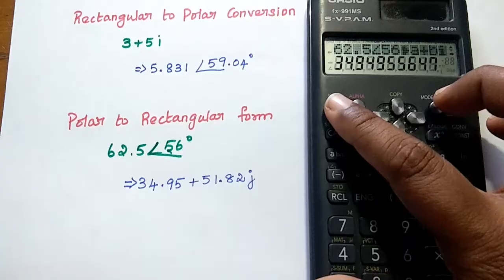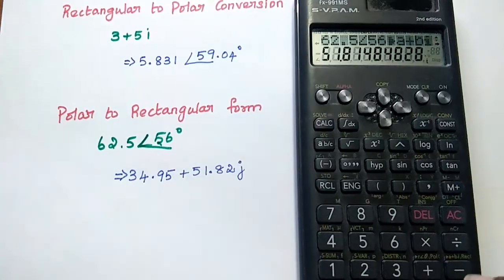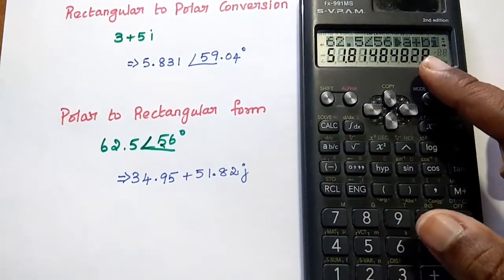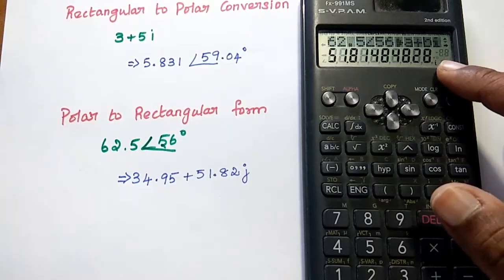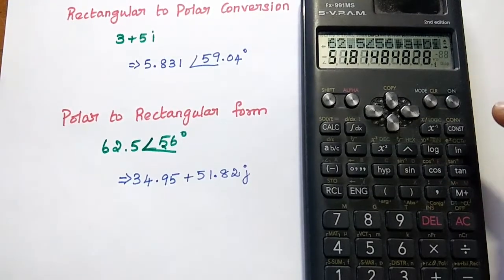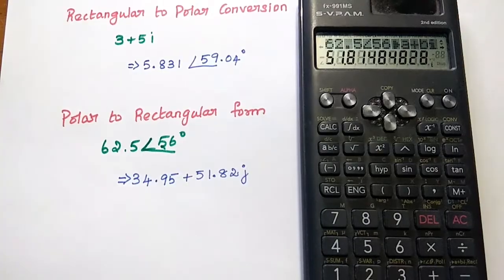And then for imaginary term, again we have to press this SHIFT and equal to sign. We can get the imaginary value. Here you can see the i symbol. This is the polar to rectangular form conversion procedure.